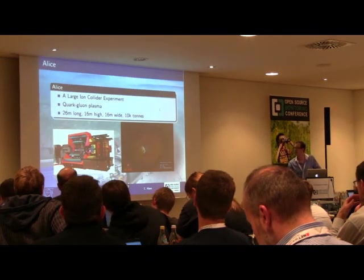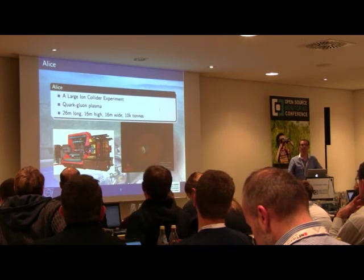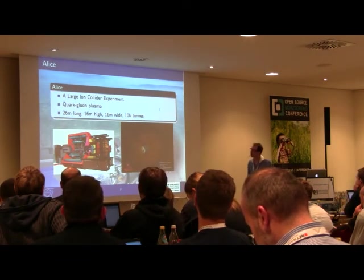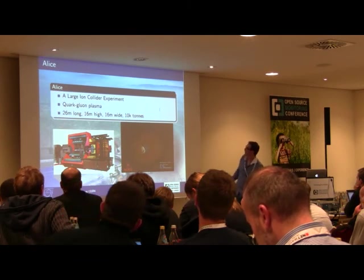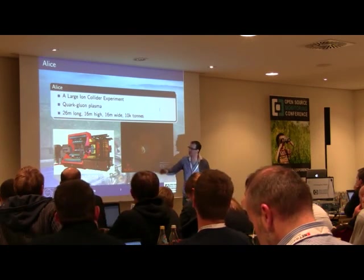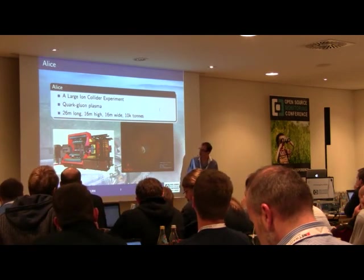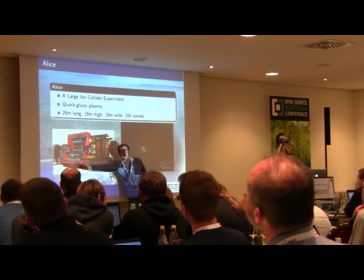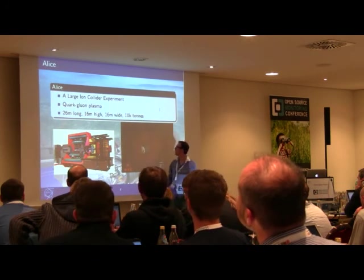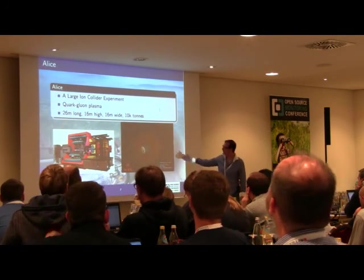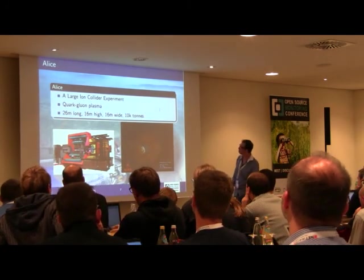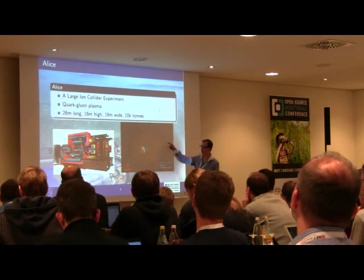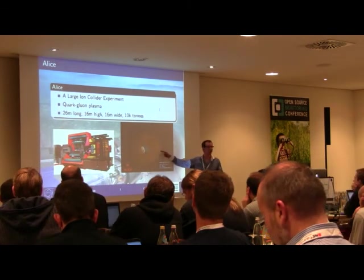The first experiment is ALICE. ALICE is looking at a kind of soup that existed right after the Big Bang. You can see a sketch of the detector on the bottom left — it's a big camera, with the two characters showing the scale. An example picture taken by this detector shows complete mess, and the whole game is figuring out what is going on from that.